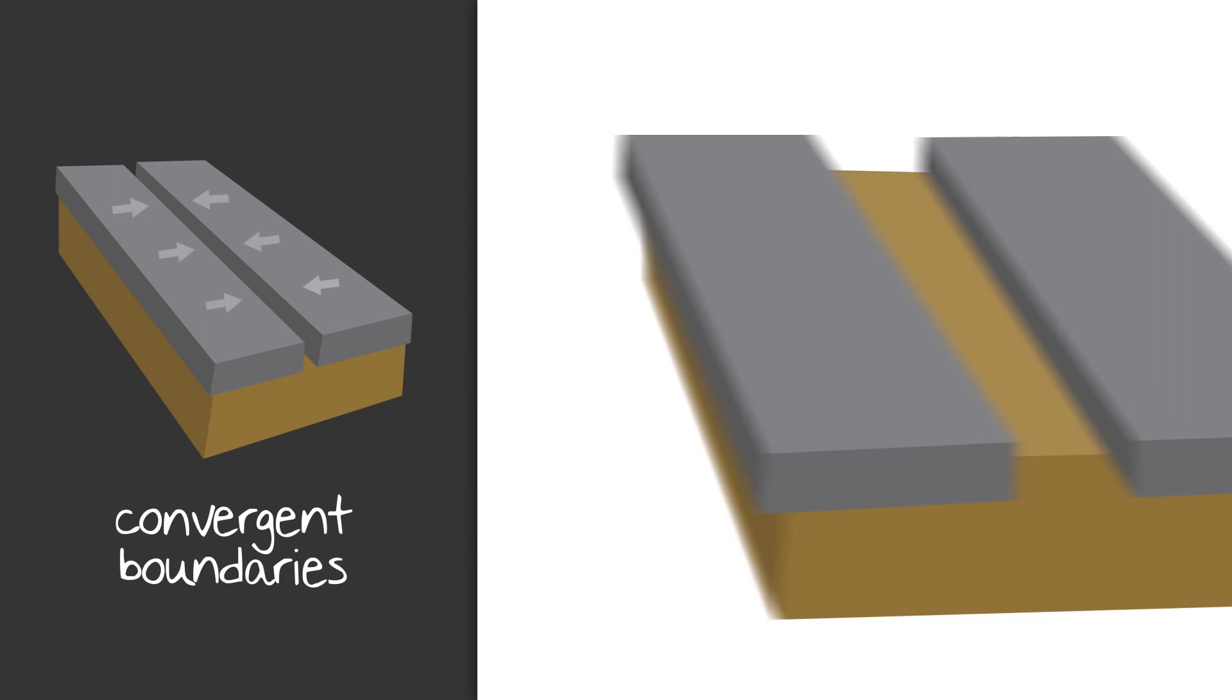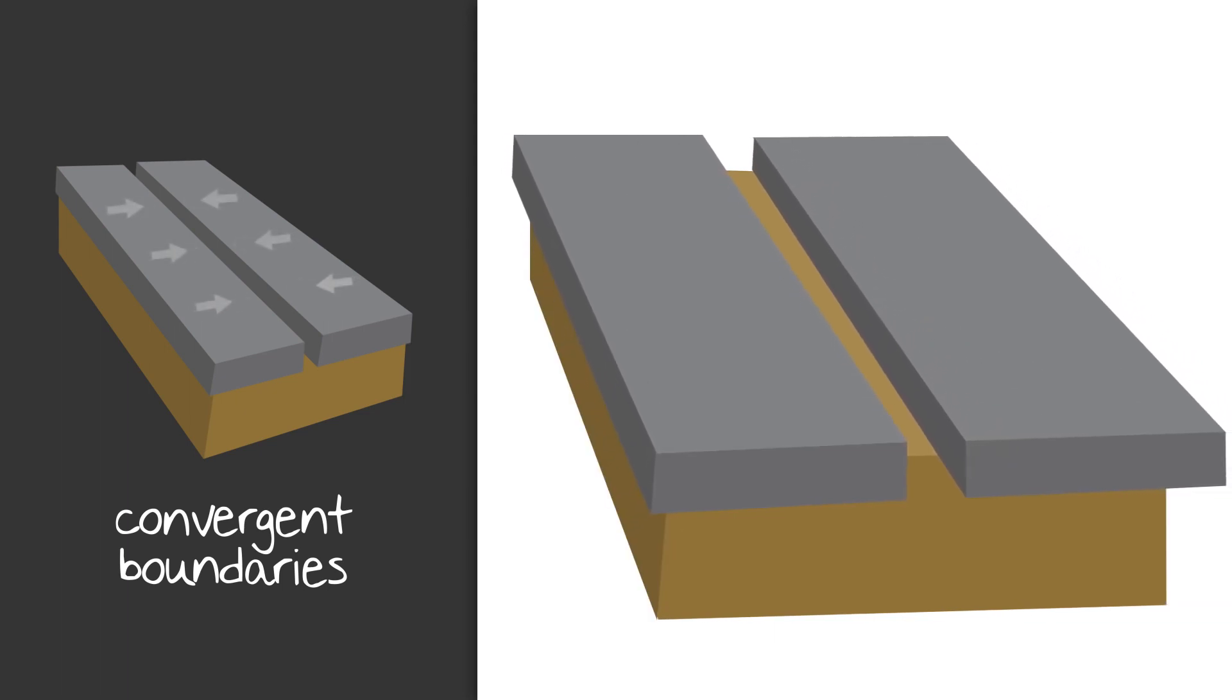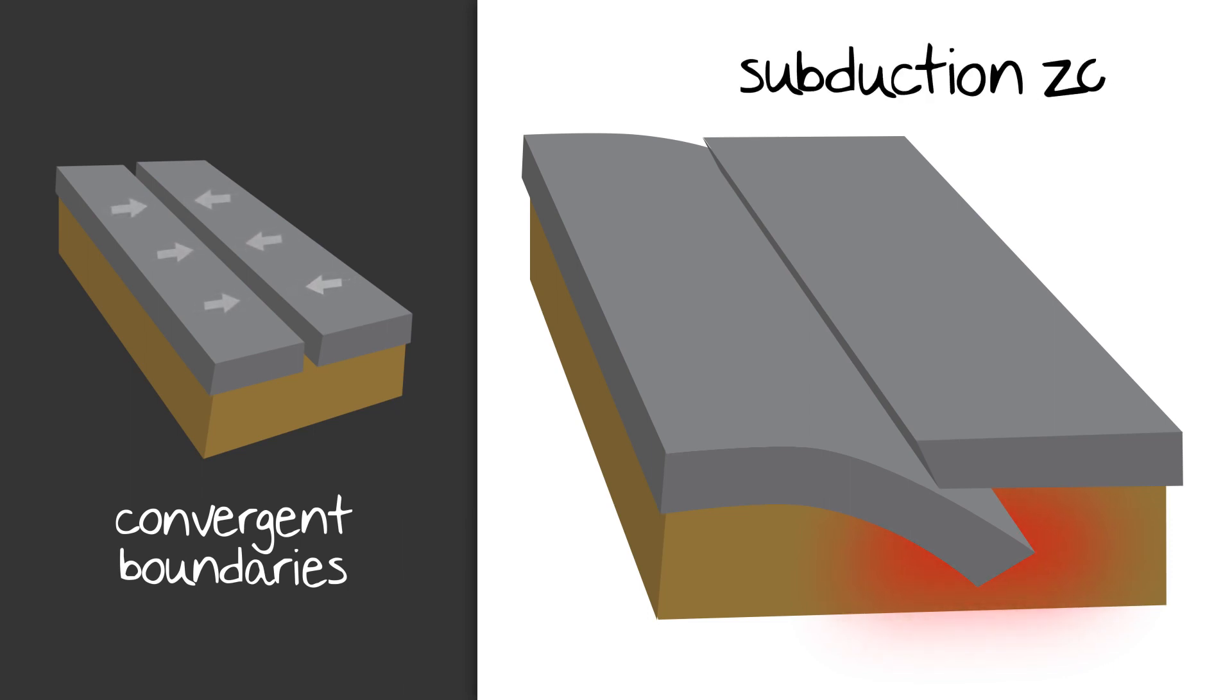As we said, convergent boundaries are when plates are moving towards one another. When the two plates collide, a couple of things can happen. One of the plates will dive under the other plate. It's usually the heavier, denser crust that dives under the lighter crust. This creates what is called a subduction zone.